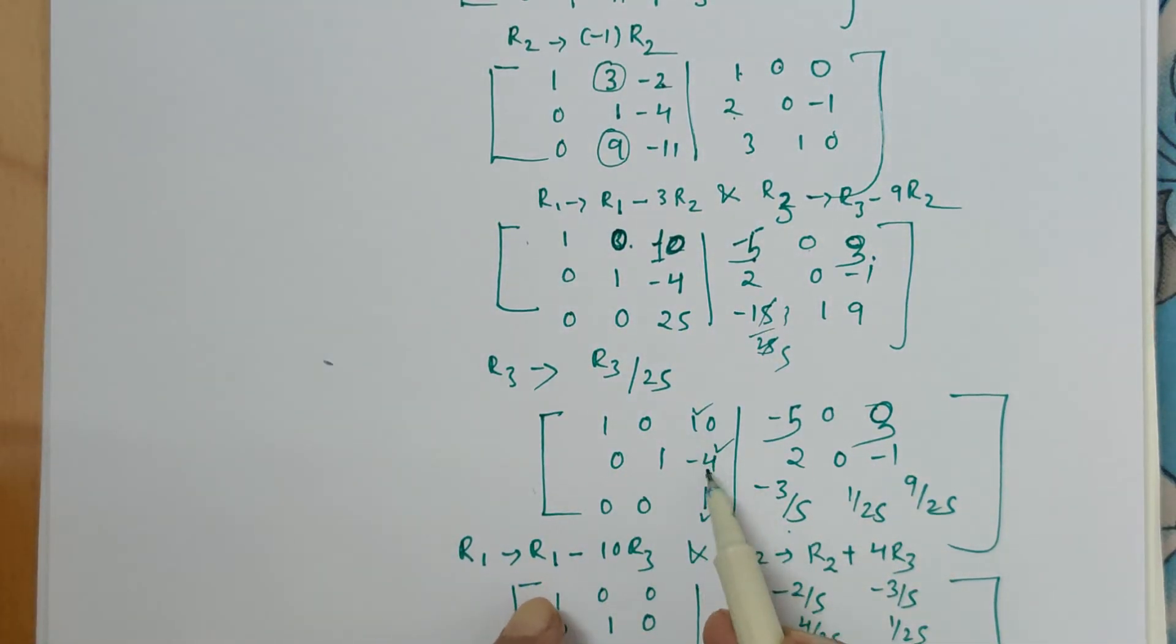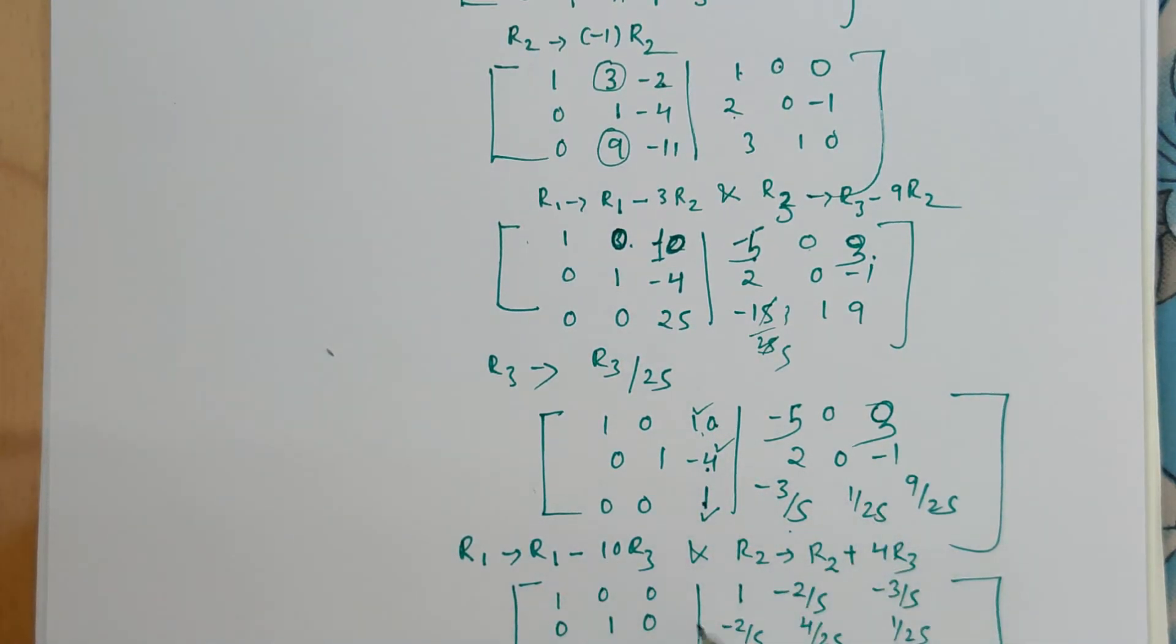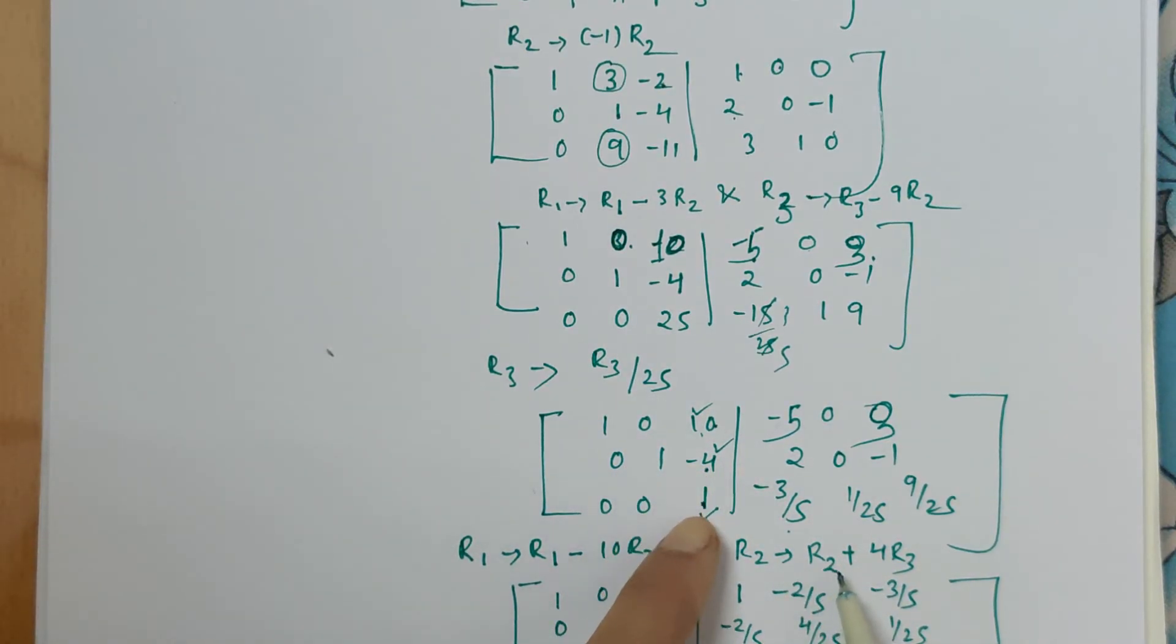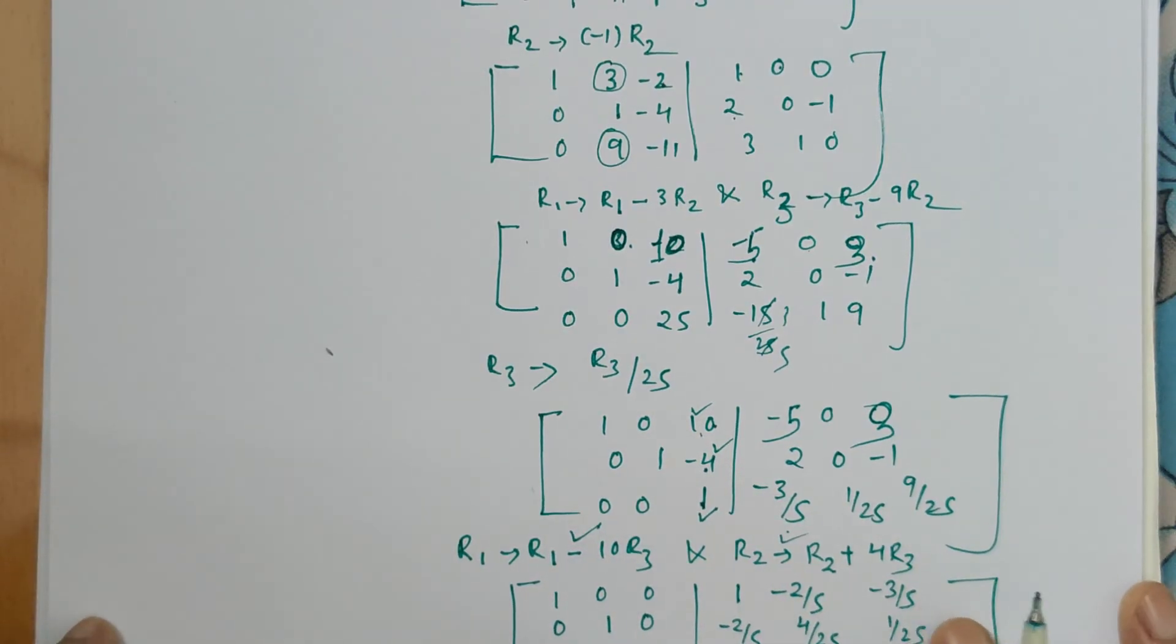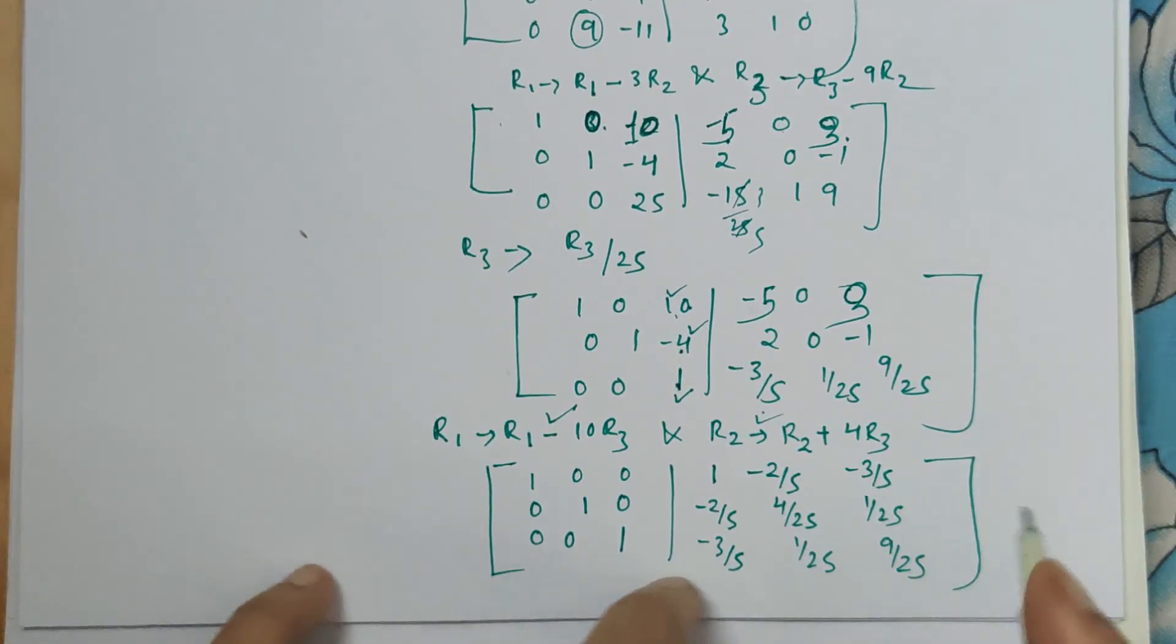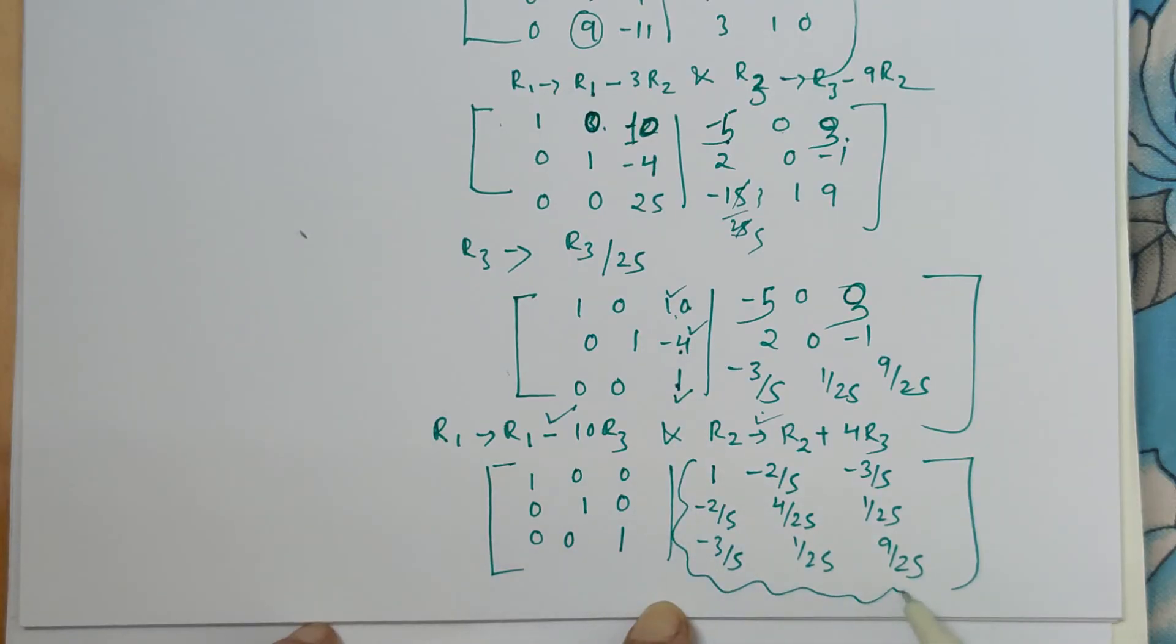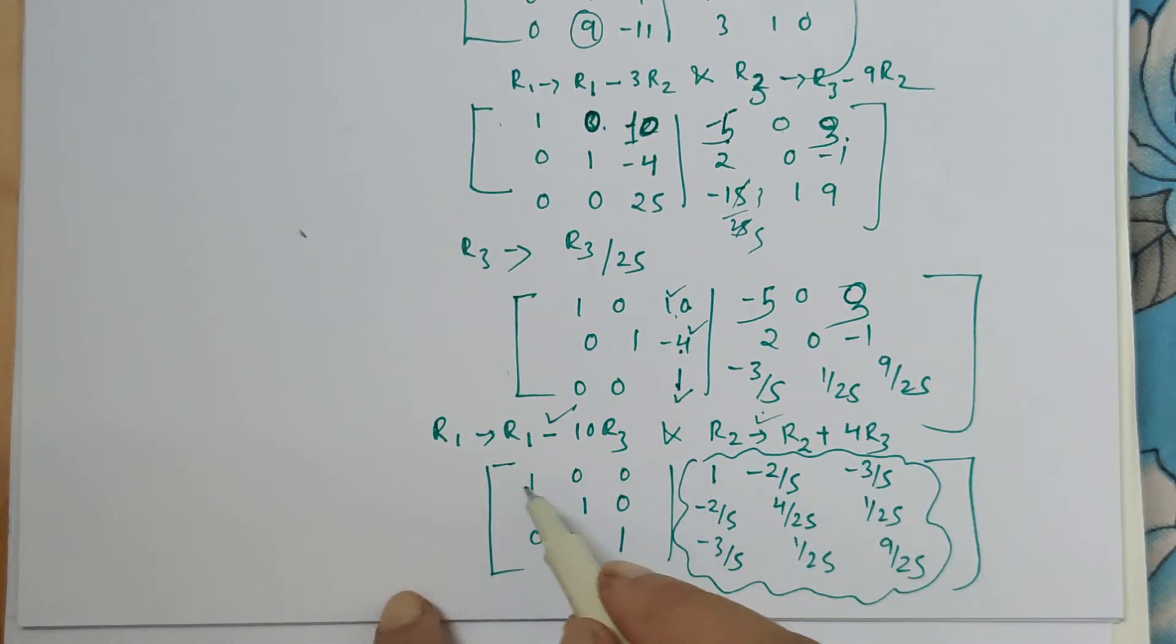For making this entry 0, we apply this operation: R1 minus 10 times this will give 0. And here also I want 0, so R2 plus 4R3 will give us 0. So in first row and second row we have to make the changes. By doing so, here also the desired changes take place as per these two operations, and the required inverse is obtained over here because this was the last step where we got the identity matrix. This is what A inverse is.